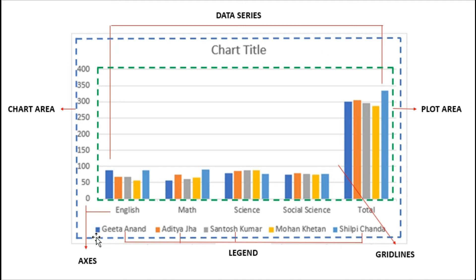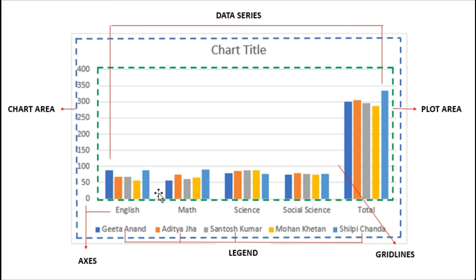Next is the axis. We have two axes — one is called the vertical axis and the other is the horizontal axis. Axes are the two dimensions: one has the label series on the horizontal axis, and the other has the value scale on the vertical axis.